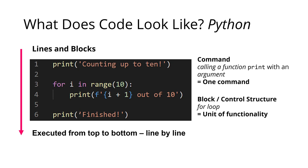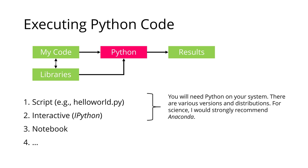But how is it executed? Executing code works like this: you have code and potentially libraries — external bits of code with new functionalities — and you hand this to Python, which executes it and gives you results. There are various ways to do this: you could have a script, which is a text file containing code; you can do this interactively; or there are notebooks, which is what we'll use in this workshop. Notebooks allow you to run Python in a browser. If you want scripts or interactive Python shells, you'll need to install Python on your system.